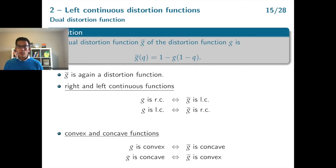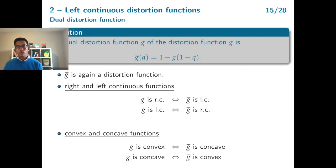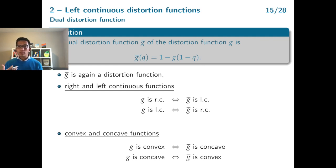What did we learn so far? We introduced the concept of a distortion function and a distorted expectation. A distortion function was used to determine the distorted tail probability — we apply a function g on the tail probabilities f-bar of a random variable x. In our risk management application, we want to think about the distorted expectations and distorted probabilities as a stressed probability of our random variable x.